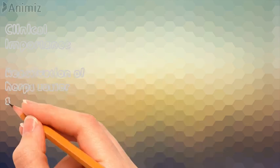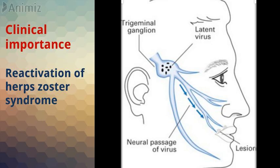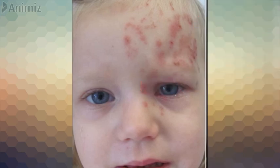An important clinical point is the reactivation of herpes zoster syndrome. Herpes zoster is a viral disease; after the initial infection, the virus is inactivated and remains in neuronal ganglia such as the trigeminal ganglion. When a suitable environment such as burn or trauma occurs, the virus reactivates, spreads through the ganglion division, and affects the area supplied by that particular division. For example, the affected area supplied by the ophthalmic division indicates spread through that division.